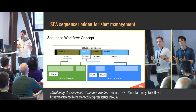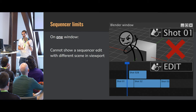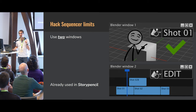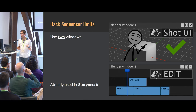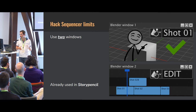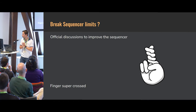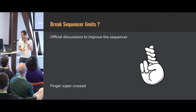However, they needed a custom build of Blender because of a sequencer limitation: you cannot show a scene belonging to a sequence in the sequencer and simultaneously display another scene in the viewport in a single window. The hack is using two windows, which is also what Story Pencil does — another add-on very close in design to the spa sequencer. There are now official discussions to improve this natively in Blender, so fingers crossed.